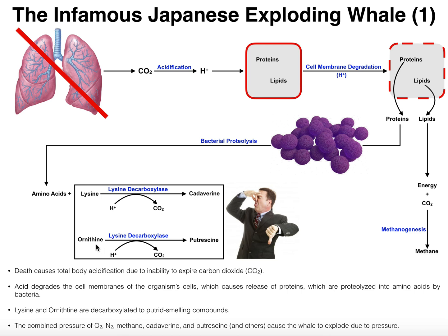There's also another molecule called ornithine — not one of the 20 amino acids found in proteins, but found in the urea cycle, and there's plenty of it inside an organism. Ornithine can also be decarboxylated by a similar enzyme, sometimes called ornithine decarboxylase, with the same general mechanism: it removes the alpha carboxyl group of ornithine and you get a molecule called putrescine.